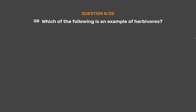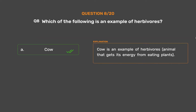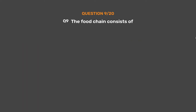Question number 8: Which of the following is an example of Herbivore? Option A: Cow, Option B: Shark, Option C: Lion, Option D: Tiger. The correct answer is Option A, Cow. Cow is an example of herbivores, an animal that gets its energy from eating plants.